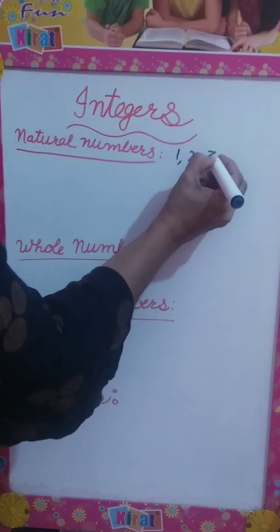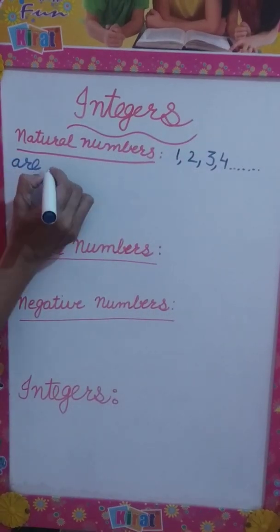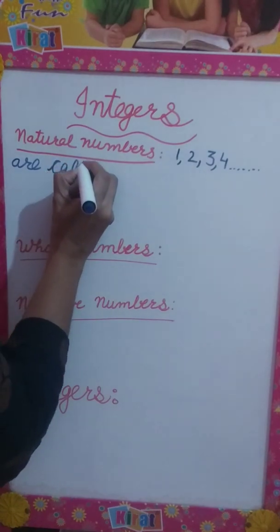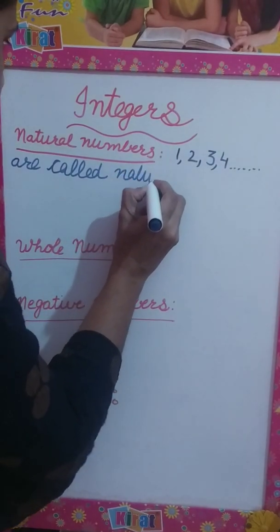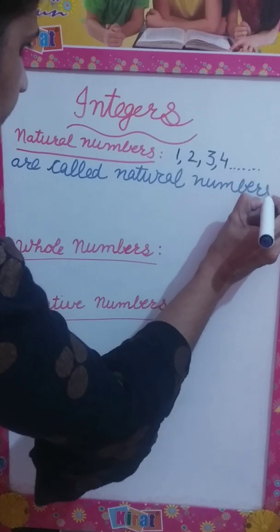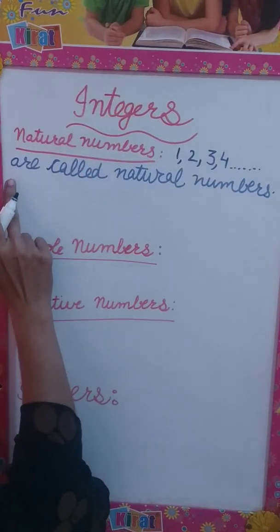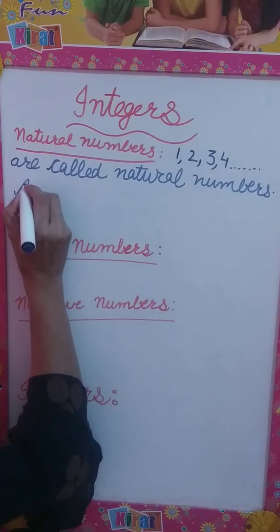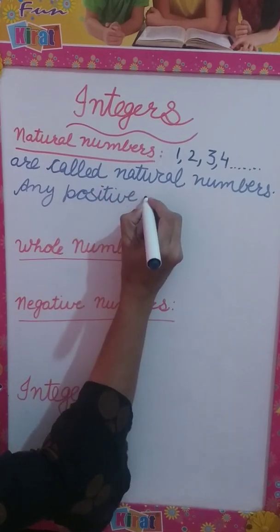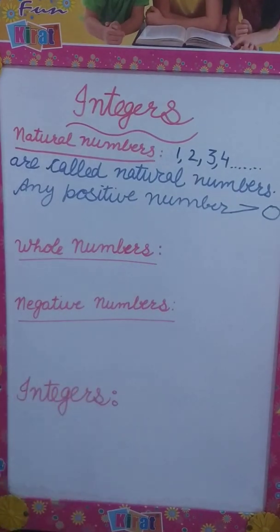2, 3, 4 and so on are called natural numbers, or in other words, the counting numbers. These are also known as positive numbers. Any positive number is always greater than 0.